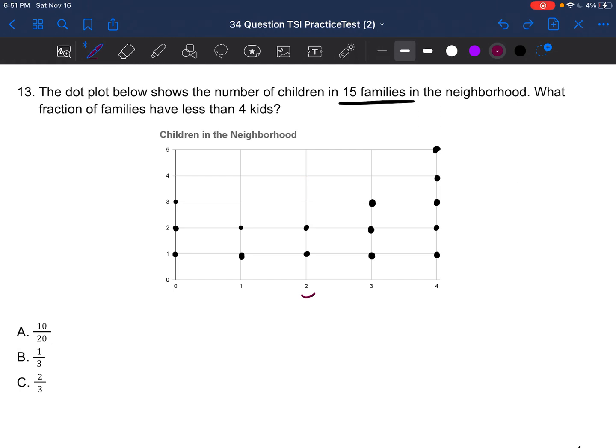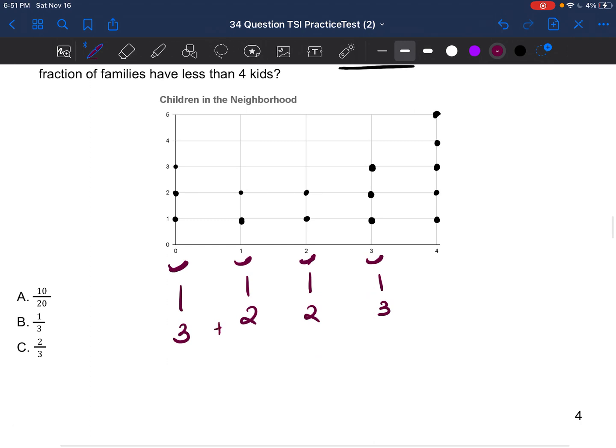And if you interviewed another family and they had two kids, you put another dot. So let's erase those dots. So how many families have less than four kids? So if you had three kids, you have less than four kids. Two kids less than four, one kid less than four. And if you have zero children, you're less than four. So there are three families that have three children. There are two families that have two children, two families that have one child, and three families that have zero children. So let's count how many families that is. 3 plus 2 is 5. 5 plus 2 is 7. 7 plus 3 is 10.